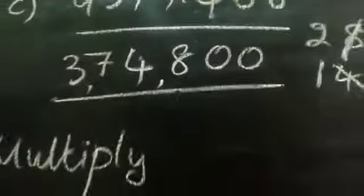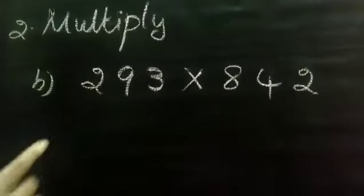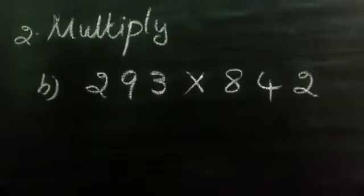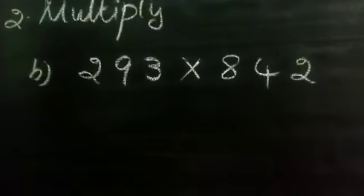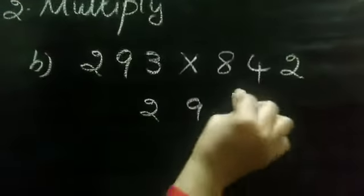See next one. I have written here B sum. 293 multiplied by 842. So this is 3 digit multiplication. So we are going to do.